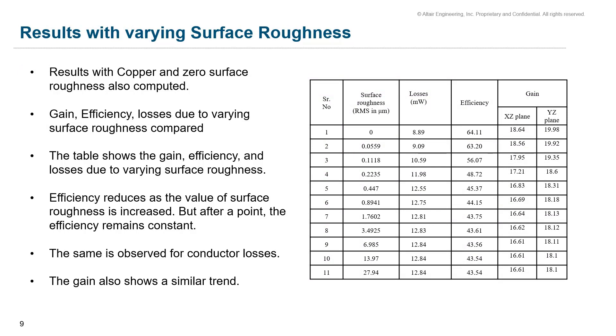On this slide, we look at the result after varying the surface roughness and using copper with 35 micrometer thickness. As a baseline, efficiency of the antenna array with zero surface roughness is computed as given in the first row of the table. The table shows the gain, efficiency, and the losses due to varying surface roughness. It is observed that the efficiency reduces as the value of the surface roughness is increased.